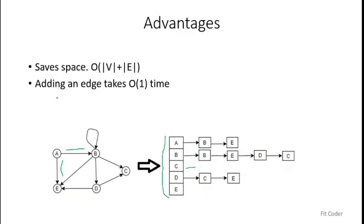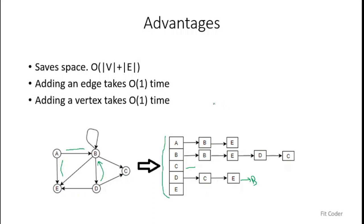The second advantage is that adding an edge is very efficient. To add an edge from D to B, we find D in the array and append to the end of its list using front and back pointers — this takes O(1) time. Similarly, adding a vertex takes O(1) time: we just resize the array and add a new element at the end.